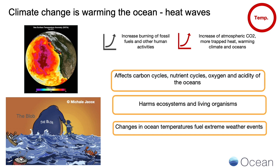As the ocean traps heat, that warming ocean affects the cycling of carbon dioxide through the ocean. The ocean stores a lot of carbon and keeps it out of the atmosphere. It affects the cycles of nutrients and oxygen and ultimately the acidity of the ocean. A warmer ocean also affects ecosystems and living organisms directly. Many organisms have limits on the temperatures they can withstand, and when the ocean warms up, they either leave or die. Changes in ocean temperatures can also fuel extreme weather events like cyclones, typhoons, and hurricanes.